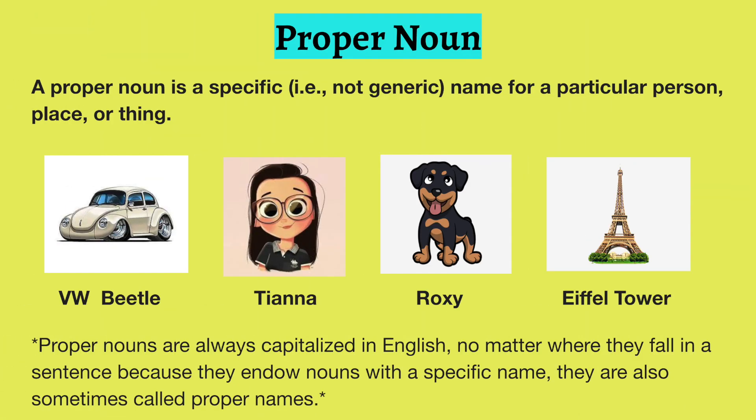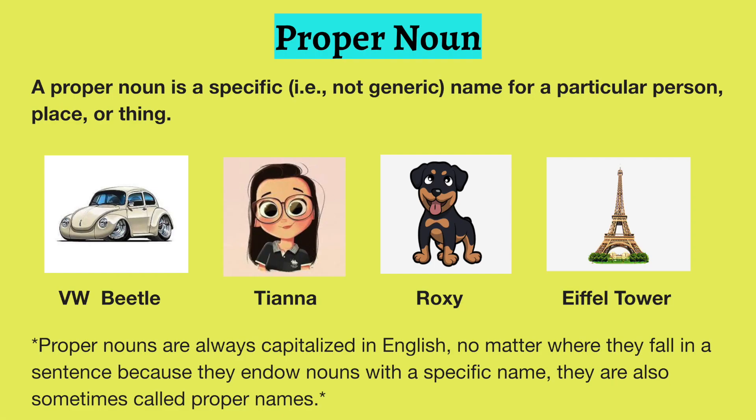Next, a proper noun. A proper noun is a name given to any person, place, thing, or animal in particular — a specific name. Look at the examples on screen. The same car has a name, a Beetle or any name for that fact. The girl is named Tiana, the dog is Roxy, and the tower is the Eiffel Tower. Remember that proper nouns are always capitalized no matter where in the sentence you use them. They are also sometimes called proper names.